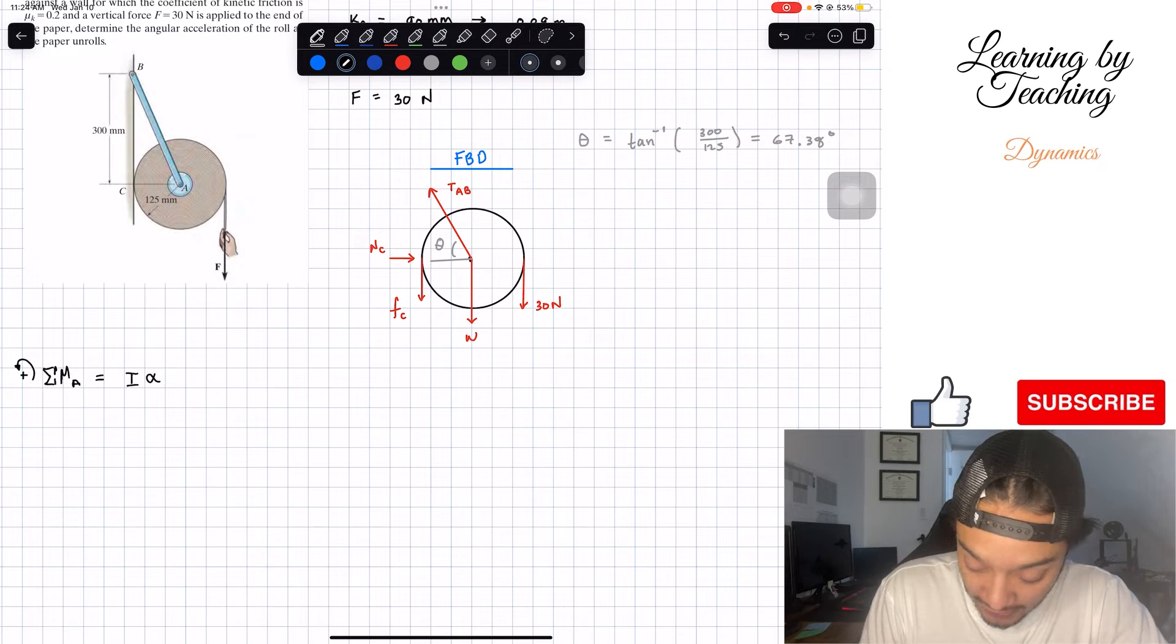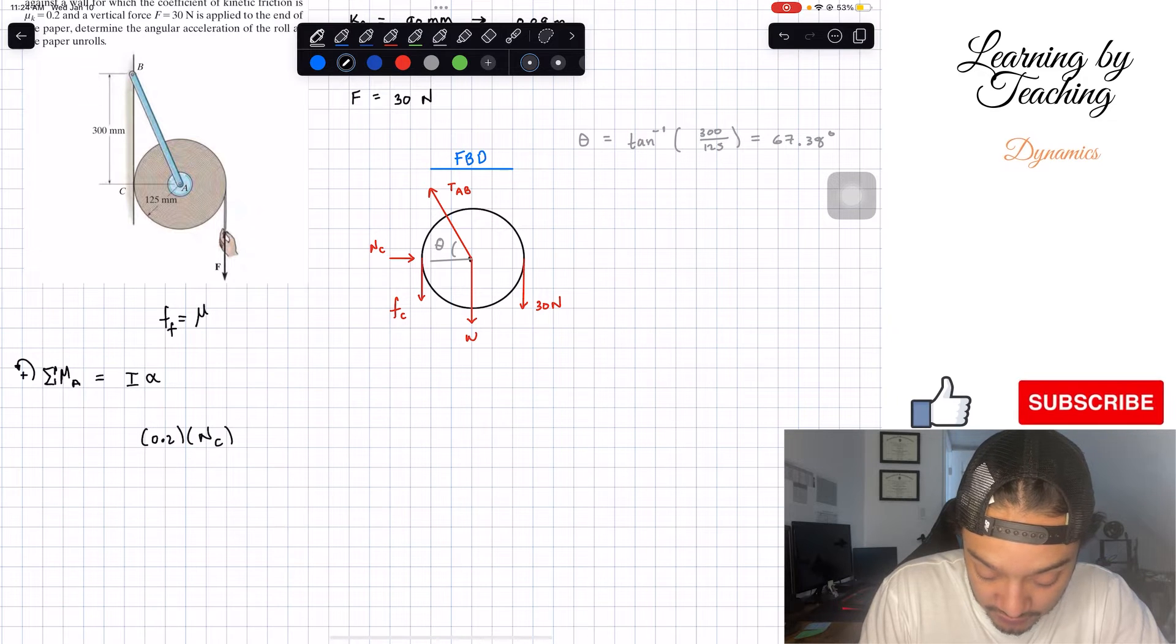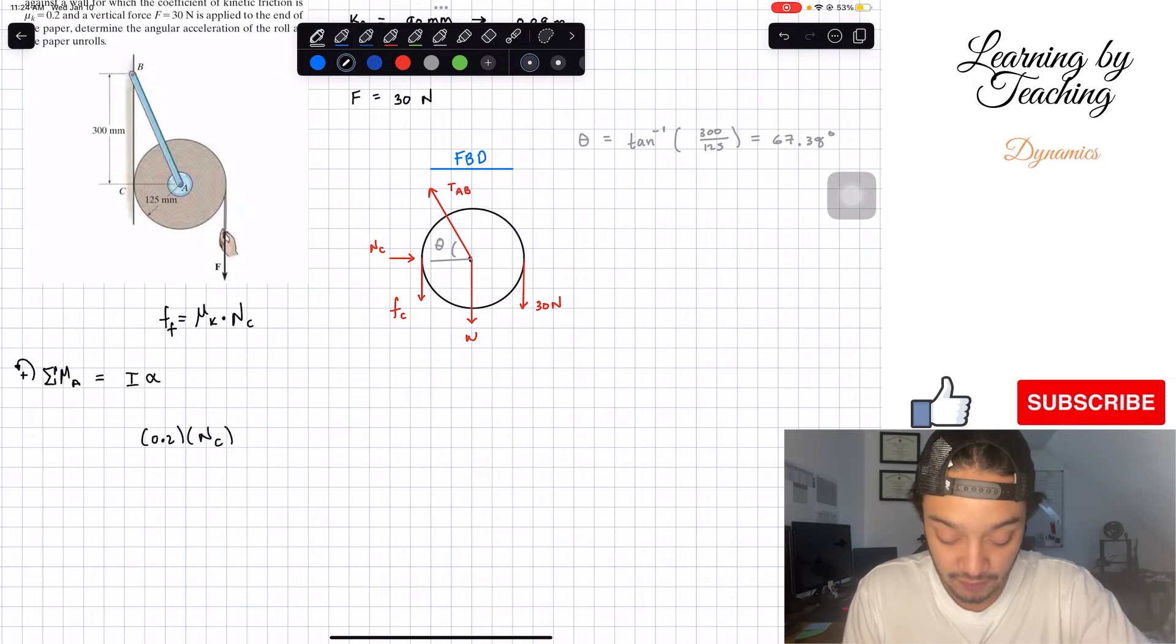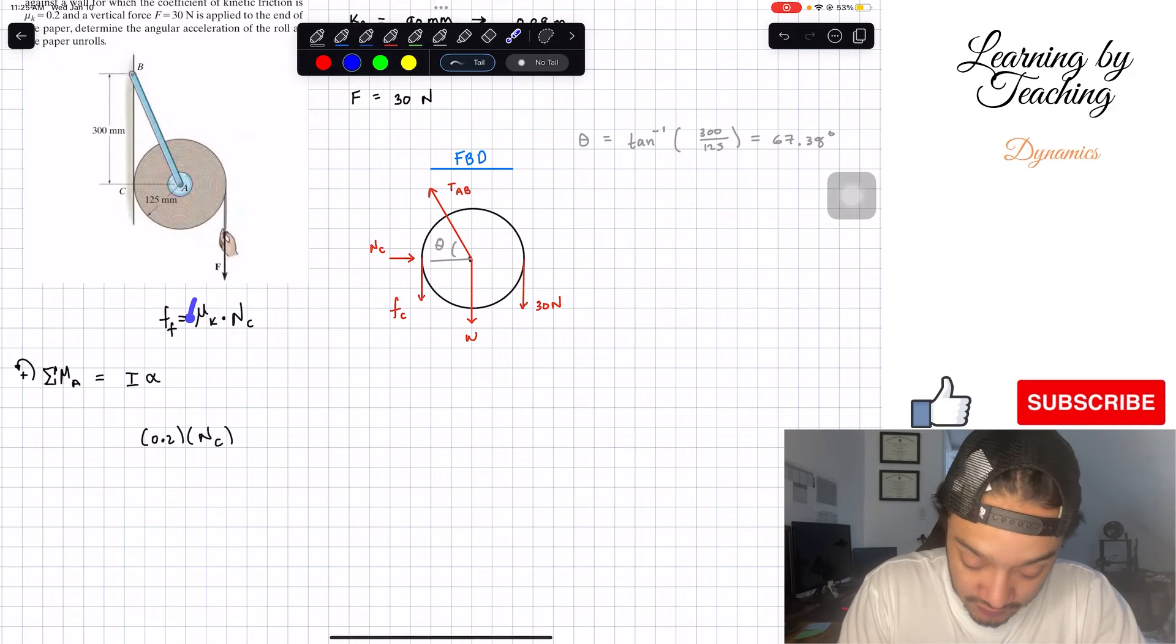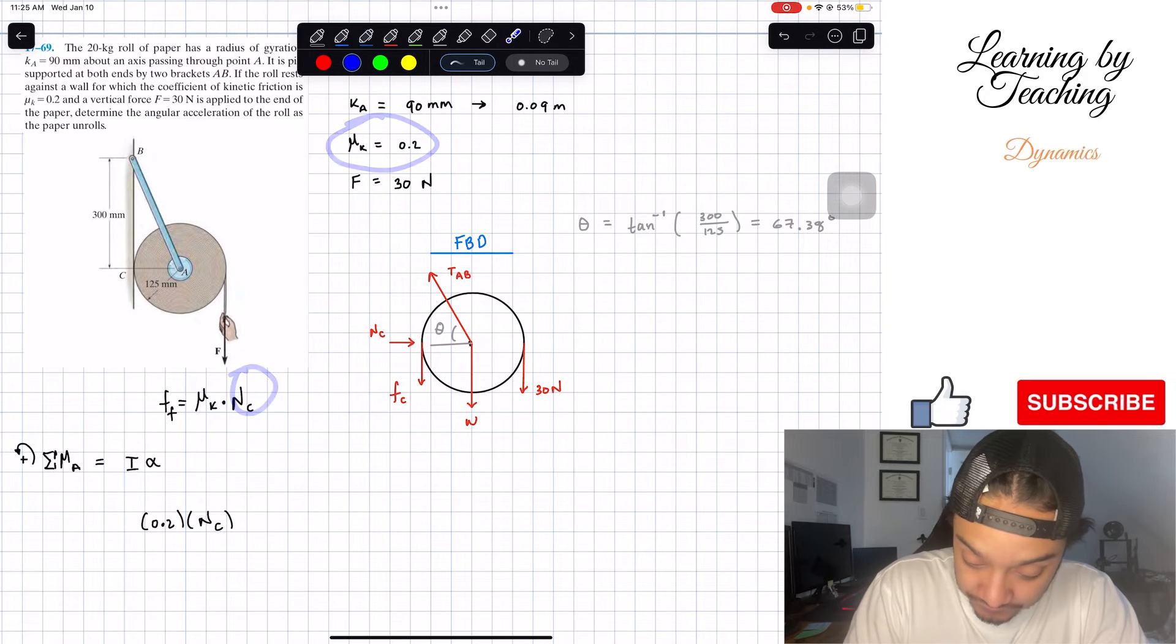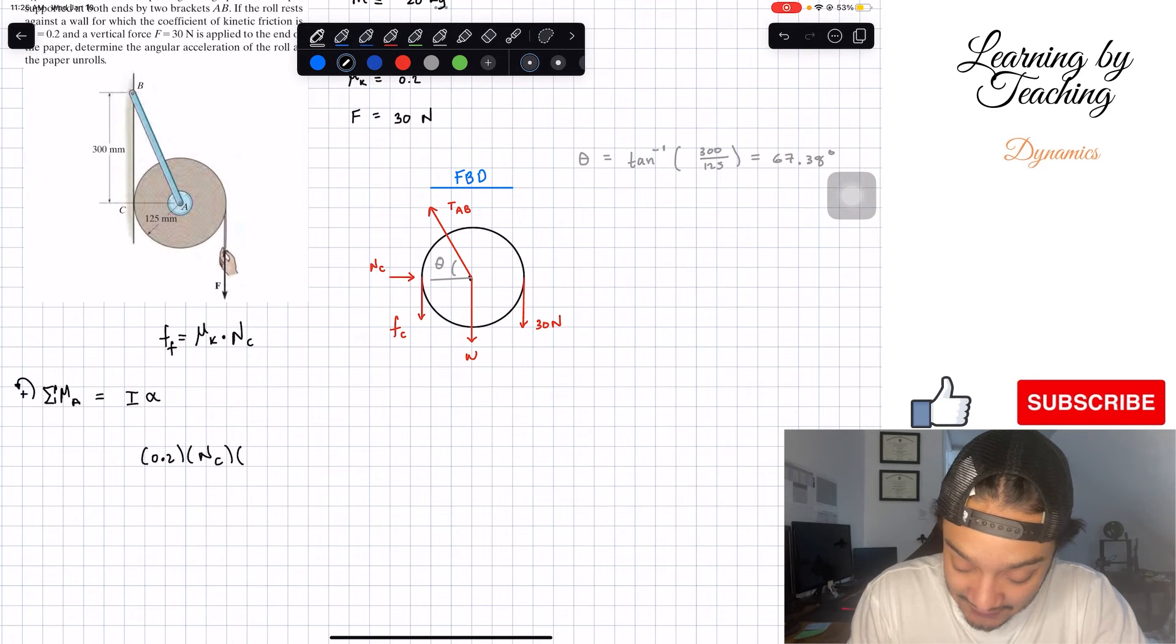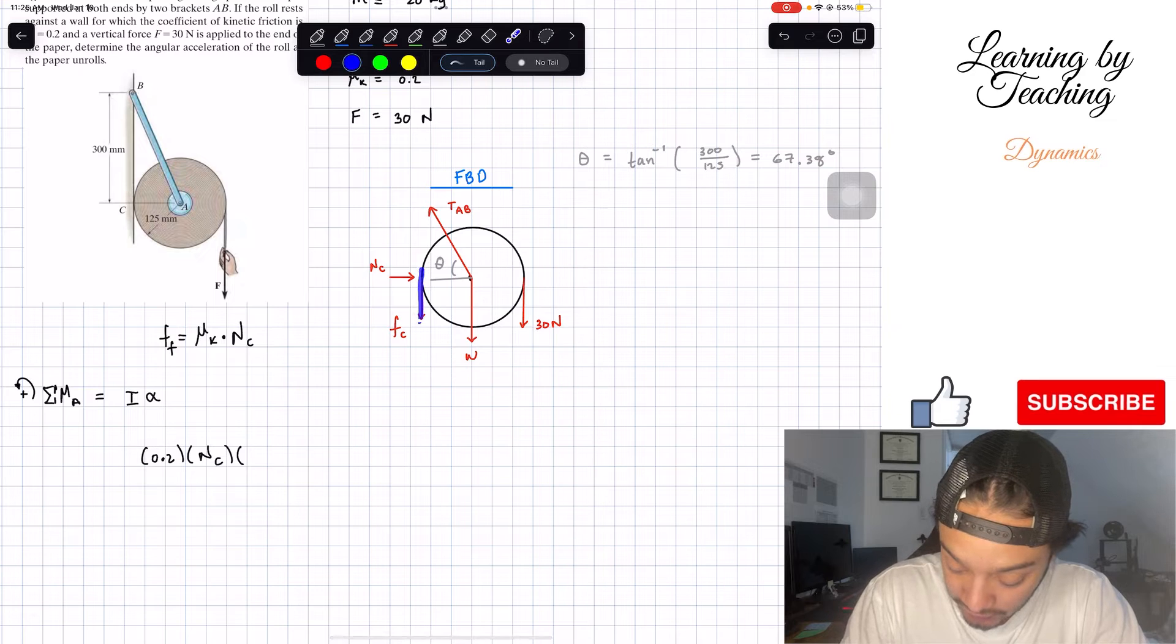What we're going to have is my frictional force, which is 0.2 multiplied by N sub C. Remember, our frictional force is always going to be the mu sub k times our normal force at that point, which in this case is normal at C. So the 0.2 comes from my mu sub k and my normal at C, and we're going to multiply this frictional force by the distance.